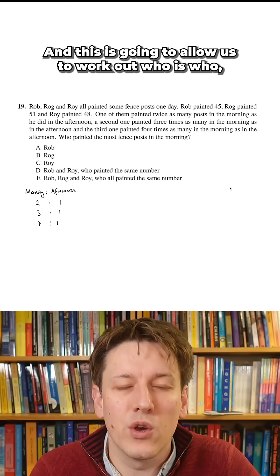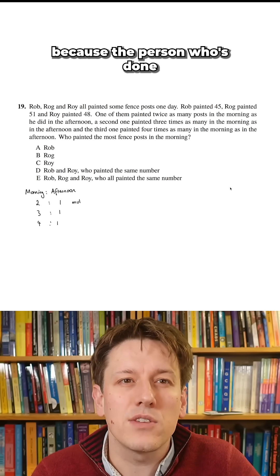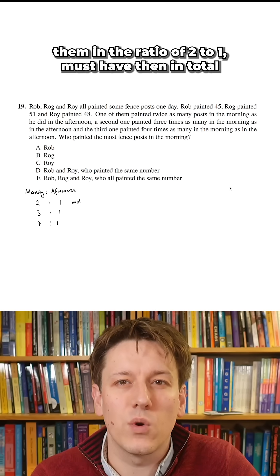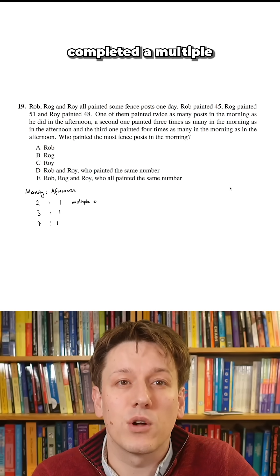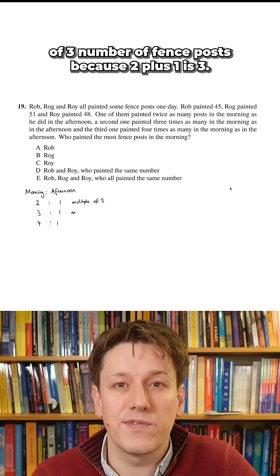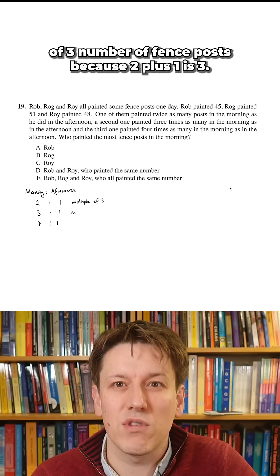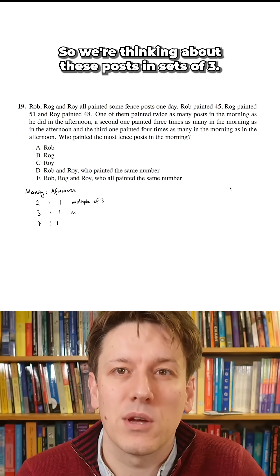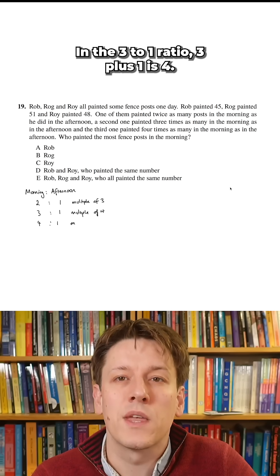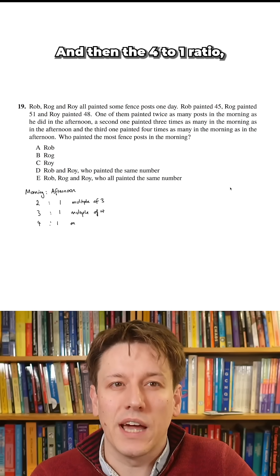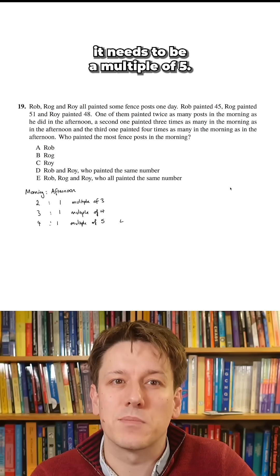This is going to allow us to work out who is who because the person who's done them in the ratio of two to one must have then in total completed a multiple of three number of fence posts because two plus one is three. In the three to one ratio, three plus one is four so the number needs to be a multiple of four and in the four to one ratio it needs to be a multiple of five.